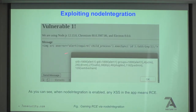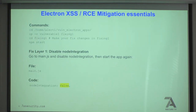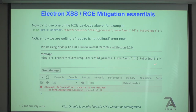Instead of alert(1) you now have command execution - pretty cool. As a developer or good pen tester, think of security as an onion with layers. First layer: disable nodeIntegration in main.js - this reduces the XSS impact. You still have XSS but it won't be immediate code execution. When you try the image onerror attack after disabling node integration, you'll get 'require is not defined' in the developer tools. That error message means nodeIntegration is disabled - you can no longer require Node.js modules.